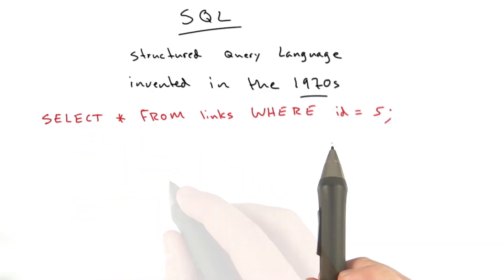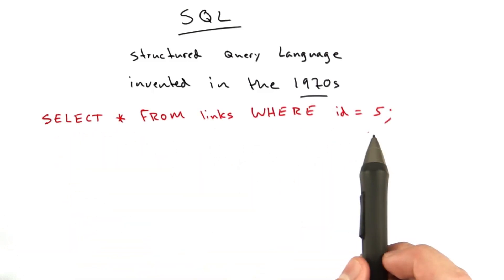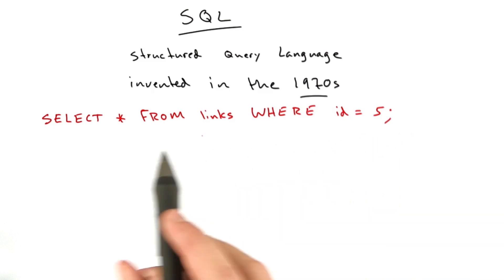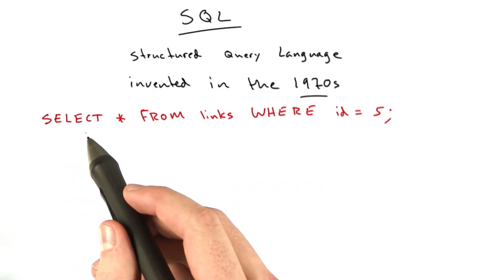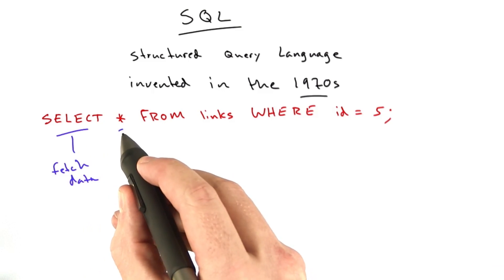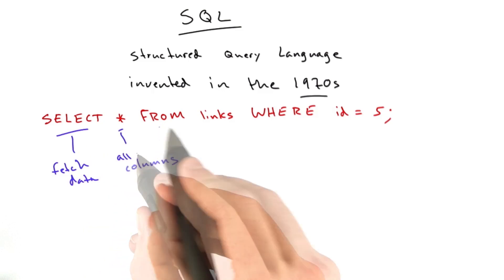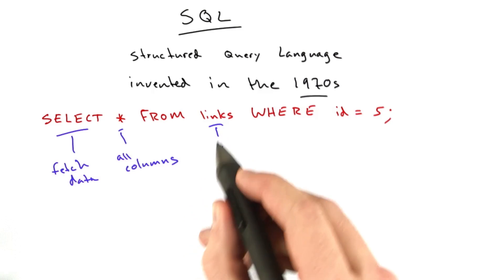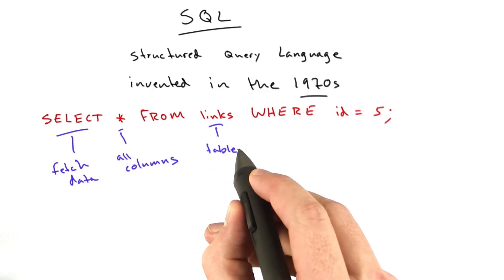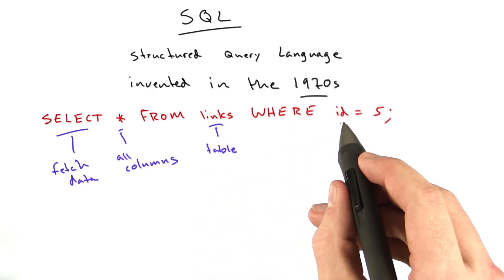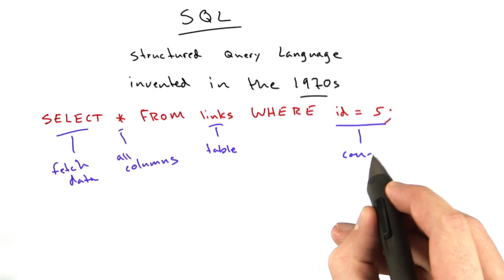SQL looks a little something like this. This is a basic SQL query. And what this says is select, which basically means retrieve data, star, this means all columns, from links, this is the table that we're fetching data from, where id equals 5. And this is a constraint.